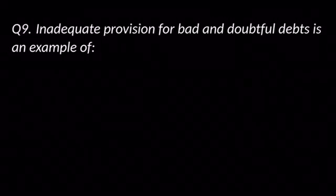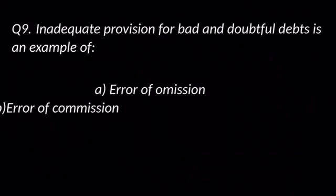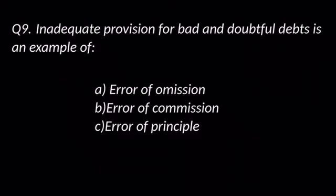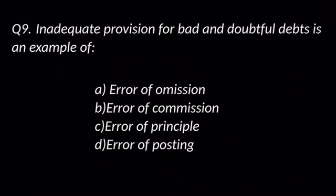Question number nine: Inadequate provision for bad and doubtful debt is an example of — options are: A. Error of omission, B. Error of commission, C. Error of principle, and D. Error of posting. The answer is C: Error of principle.